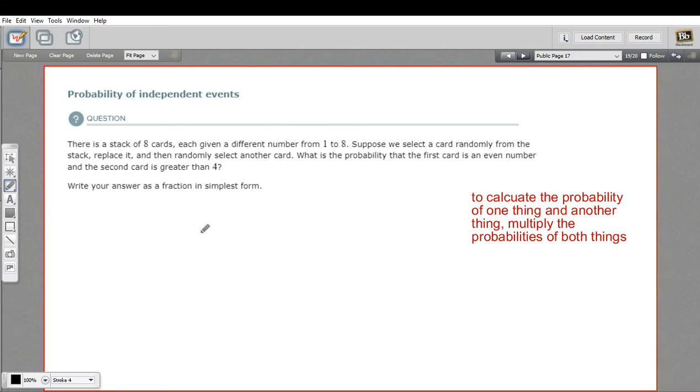In this problem, we are finding the probability of what are called independent events. When you have more than one thing, more than one event, and you want to find the probability of both of those things happening, you multiply them together.